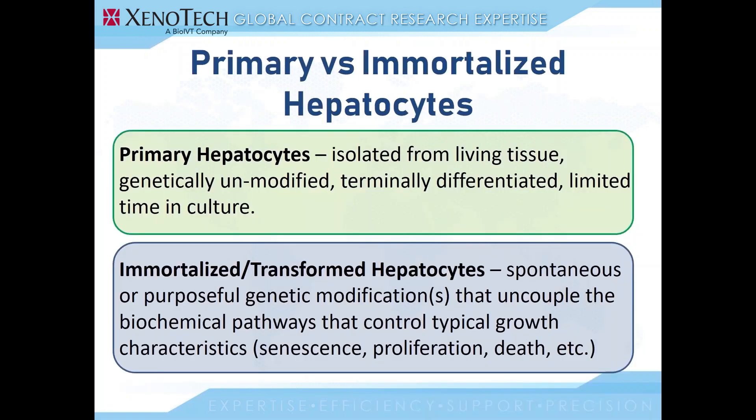At the most basic level, hepatocytes can be differentiated between primary hepatocytes and immortalized hepatocytes. Primary hepatocytes are unmodified, terminally differentiated, and isolated from living tissue. They do not proliferate in culture, they are representative of the donor they are isolated from, and they have a very finite time in culture.